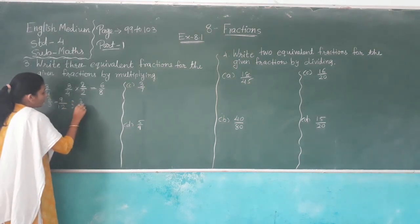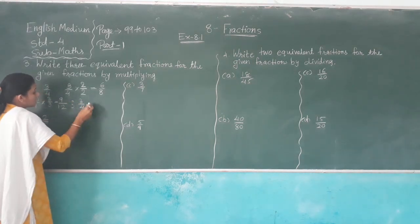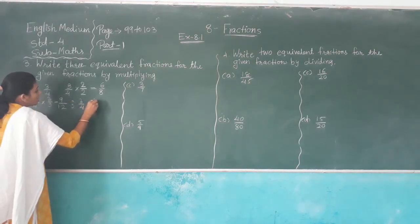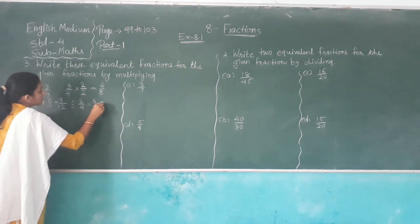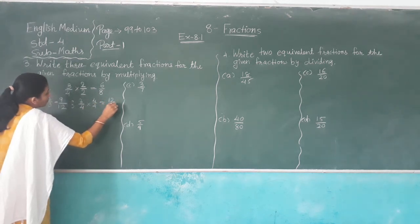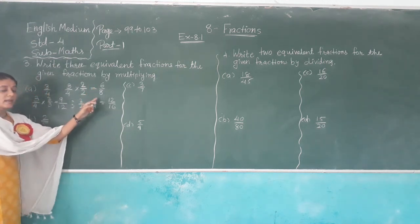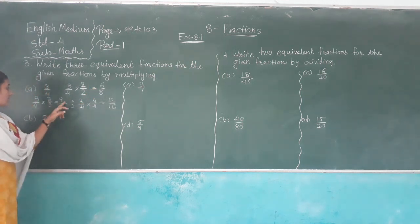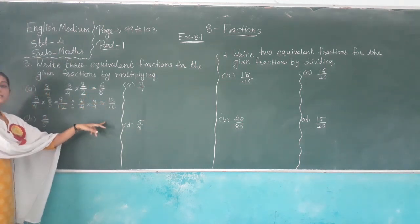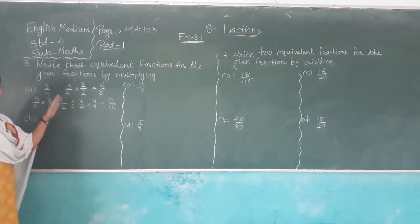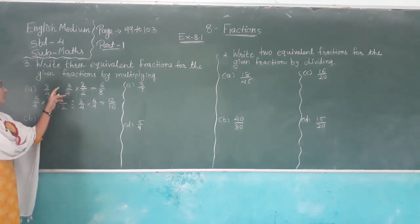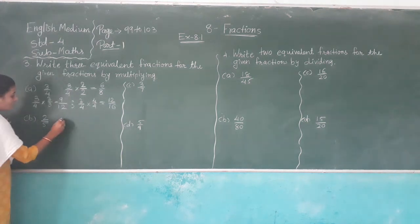Three out of four multiplied by four over four: three fours are twelve, and four fours are sixteen. So six-eighths, nine-twelfths, and twelve-sixteenths are equivalent fractions of three out of four.